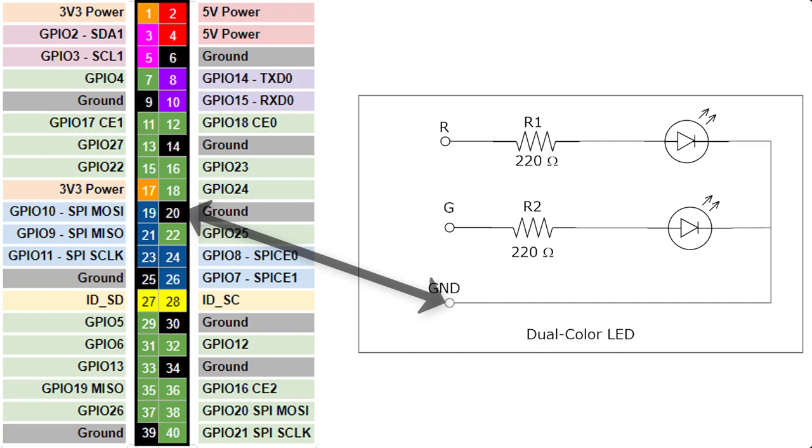The yellow wire coming from pin R on the dual color LED board will be connected to physical pin 12, which is GPIO 18.